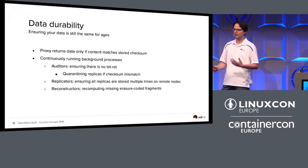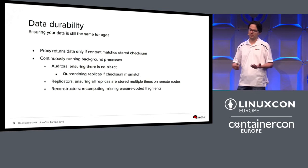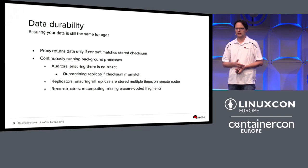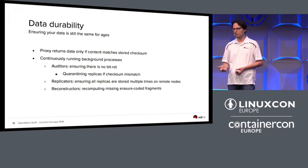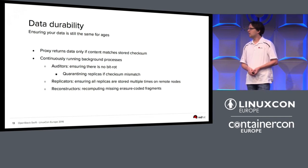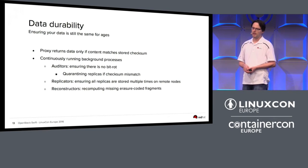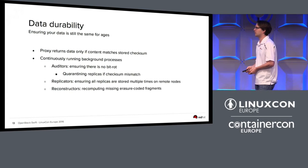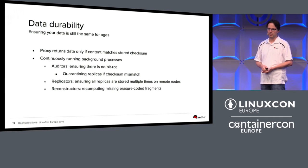Because you're now missing one copy, Swift replaces it automatically using the replicator process. The replicator continuously checks that the configured number of copies — say, three — still exists in your cluster. Copies might be missing because the auditor quarantined an object, because of a broken disk, a missing server, or because you upgraded your cluster and added 20 new nodes that don't know about existing objects yet. You can also store data using erasure coding instead of replication. With erasure coding, each object is computed into erasure-coded fragments and stored across your cluster. A reconstructor process runs in the background to recompute any missing erasure-coded fragments.